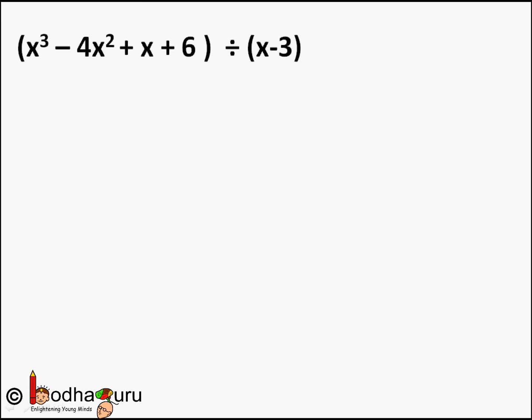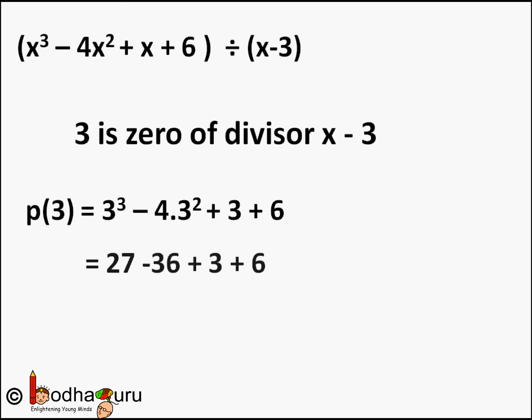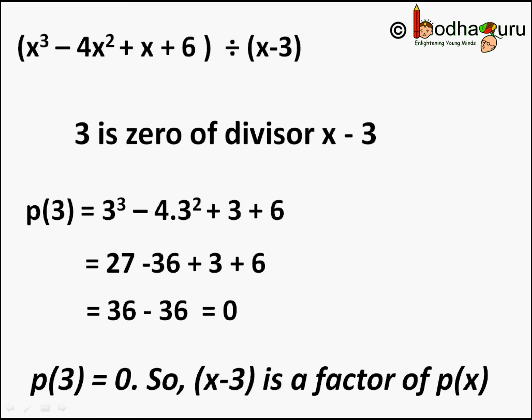Let us take another example: p(x) = x³ − 4x² + x + 6, divided by (x − 3). We want to find out whether (x − 3) is a factor. First find the zero of the divisor (x − 3): it is 3. Now find the value of p(3) by substituting into the polynomial: 3³ − 4 · 3² + 3 + 6. This gives p(3) = 0. Since p(3) = 0, (x − 3) is a factor of p(x) = x³ − 4x² + x + 6.